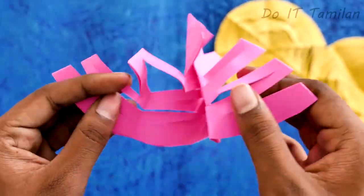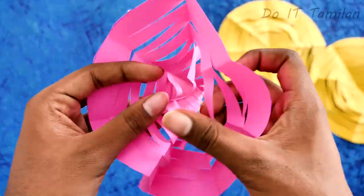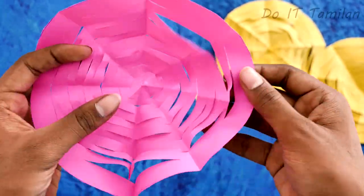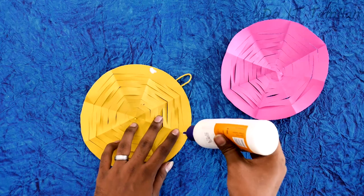I am going to make two colors. I am going to make a rose color. After we finish, we will join the two.